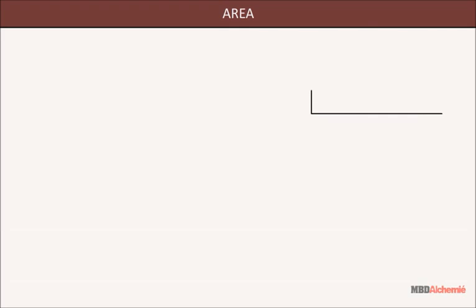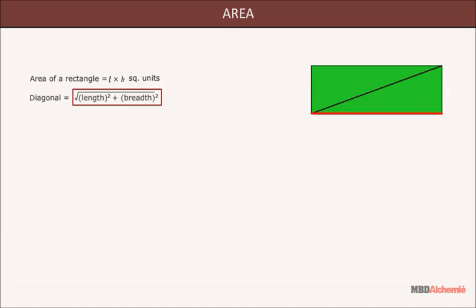Area. Let us learn about the area of a rectangle. Area of rectangle is equal to length × breadth or L × B square units. Its diagonal is equal to √(length² + breadth²) or √(L² + B²).